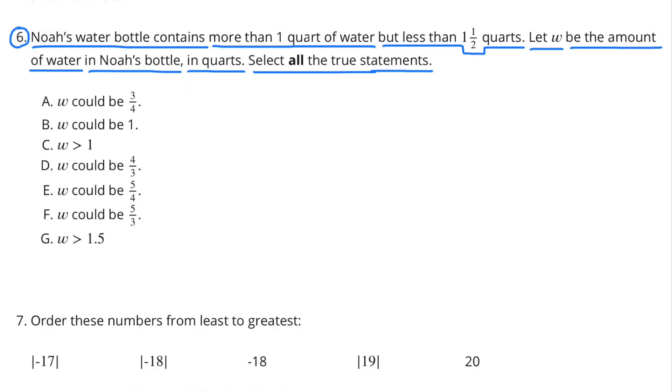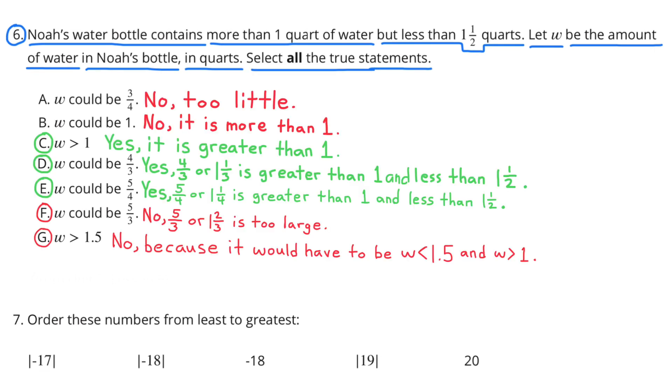Problem 6: Noah's water bottle contains more than one quart of water but less than one and a half quarts. Let W be the amount of water in Noah's bottle, in quarts. Select all the true statements. A would not be true because that's too little water. B is also not true because it's too much water.